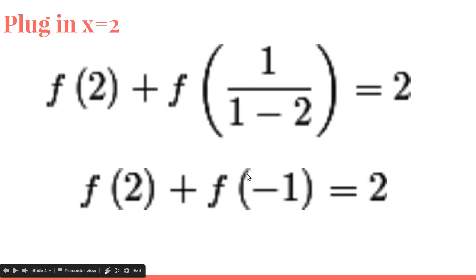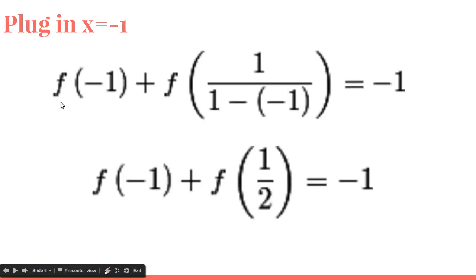So now we have f(-1). So now we need to find that. And so we plug in negative 1. So we get f(-1), and then this simplifies to f(1/2) equals negative 1.